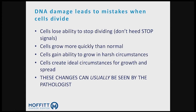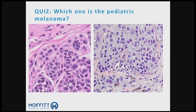What these mutations do to cells to make them turn bad is make them not know how to stop dividing — they don't heed the warning to stop. They grow more quickly, they gain the ability to grow in harsh circumstances, and they create ideal circumstances for growth and spread. Most of the time we can see these changes under the microscope. But it's not always so easy — vote for A or B: one of these is benign and one of these is a melanoma.